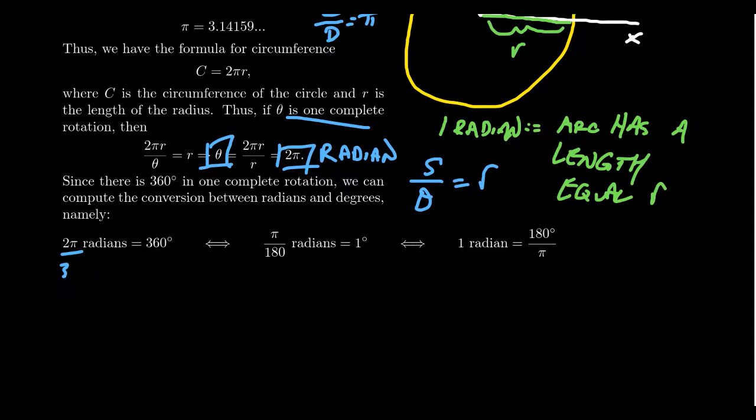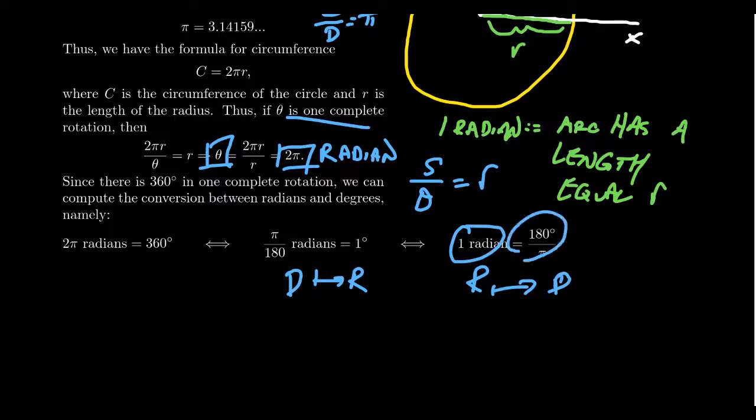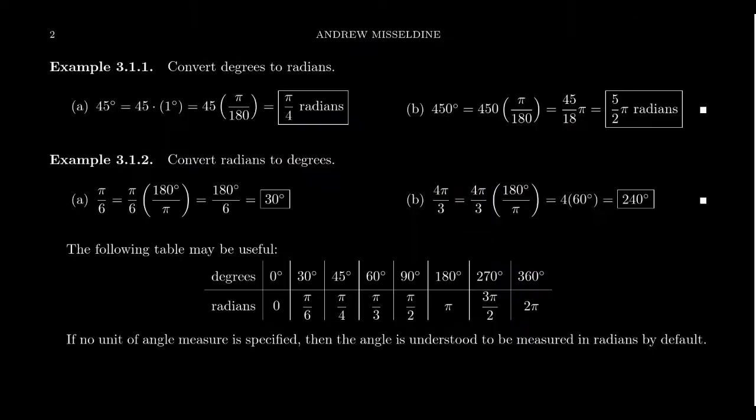We see that one degree is equal to π over 180 radians. Likewise, if we take this equation and divide both sides by 2π, then the left-hand side would become one radian, and 2 goes into 360 180 times. So one radian is equal to 180 degrees over π. This gives us a way of converting back and forth between radians and degrees. This formula shows us how we convert from degrees into radians, and this one tells us how to change from radians to degrees.